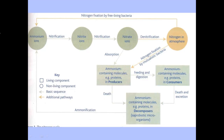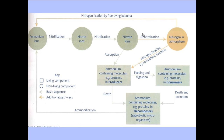So you can see that we have gone from ammonium ions to nitrite and then to nitrate. This arrow here shows absorption — specifically absorption by active transport, which requires ATP. The nitrate ions are then absorbed into the plant.